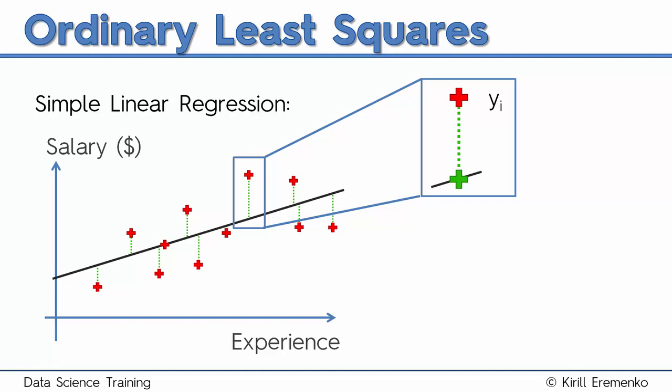The red cross is called Yi (Y subscript i), and that is the actual observation. The green cross is called Yi-hat, and that is the modeled observation or the modeled value. So basically, with that level of experience, where does the model predict that he would be earning?